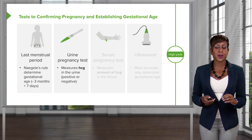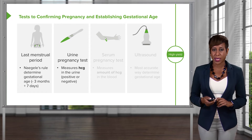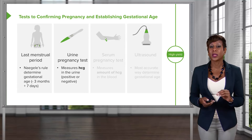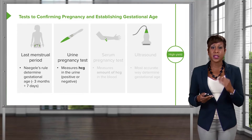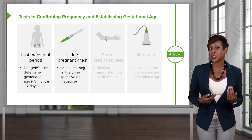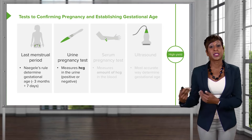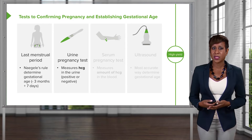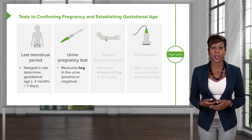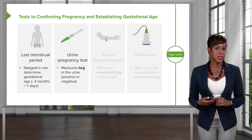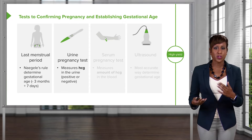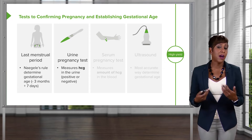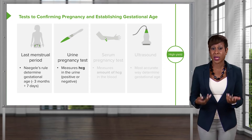We can also confirm pregnancy through a urine pregnancy test. The urine pregnancy test is a qualitative test, meaning it either tells us the patient is pregnant or the patient is not pregnant. There are some benefits in that we can tell if a patient is pregnant, such as in our case when we're figuring out our differential diagnosis. But this does not tell us how far along the pregnancy is.